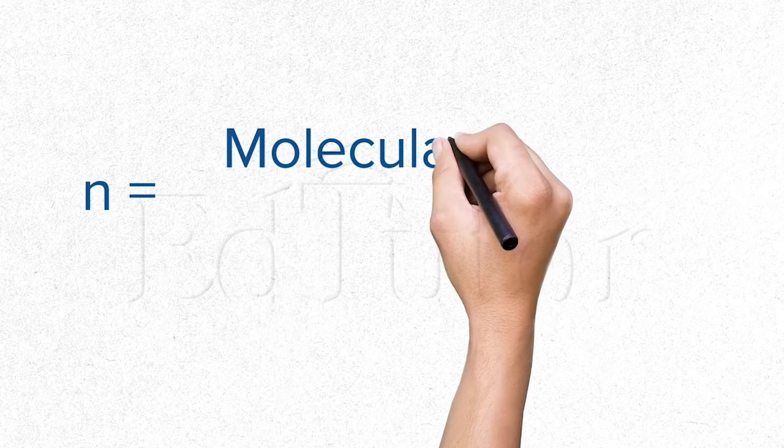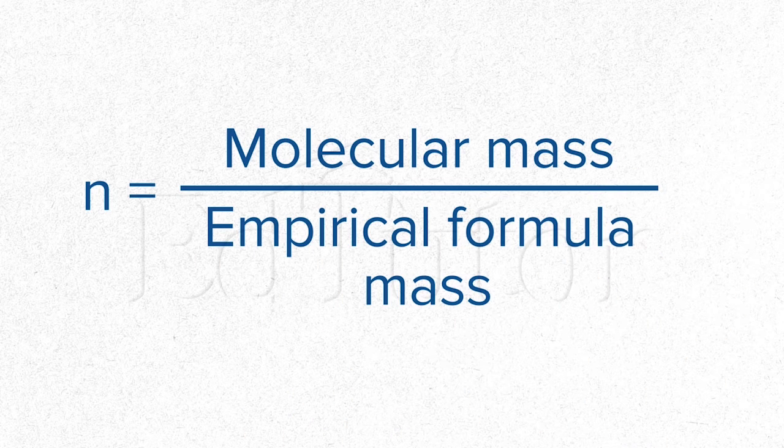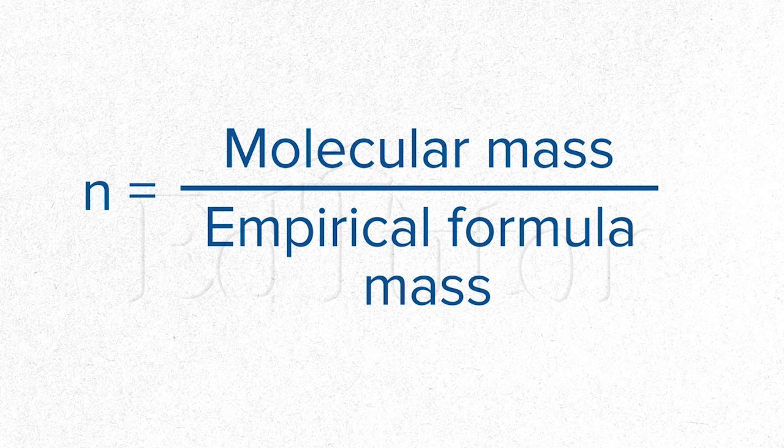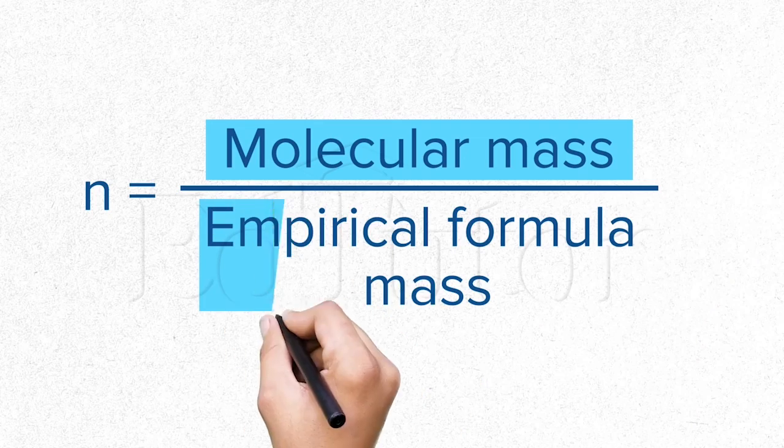Remember, N which is a simple integer is basically the ratio of molecular mass and the empirical formula mass of a substance. It can be calculated by the formula N equals to molecular mass divided by empirical formula mass.